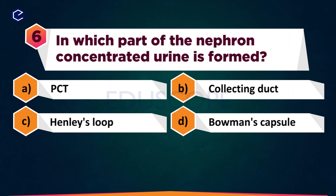In which part of the nephron is concentrated urine formed? Options: PCT, Collecting duct, Loop of Henle, Bowman's Capsule.